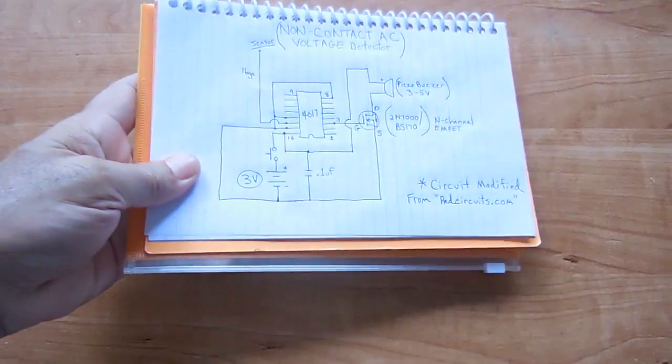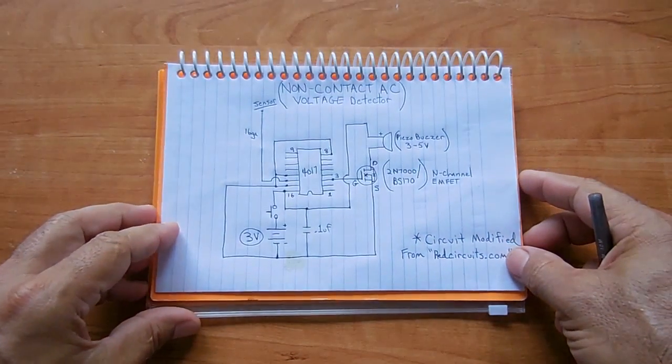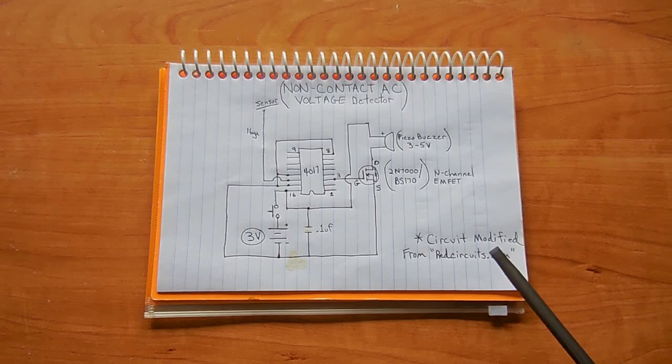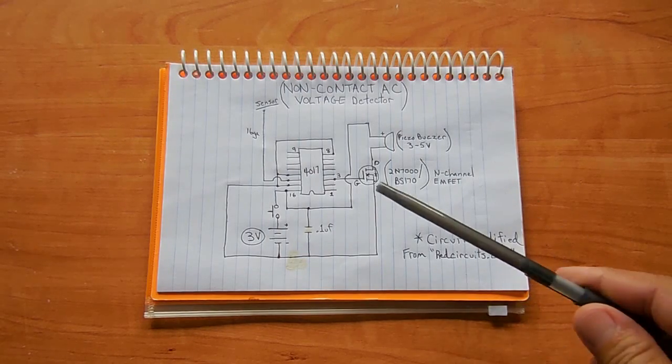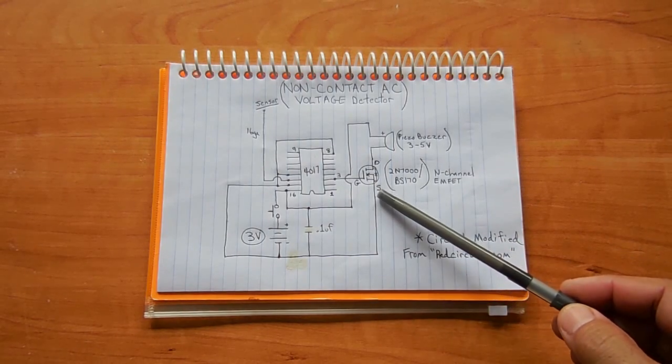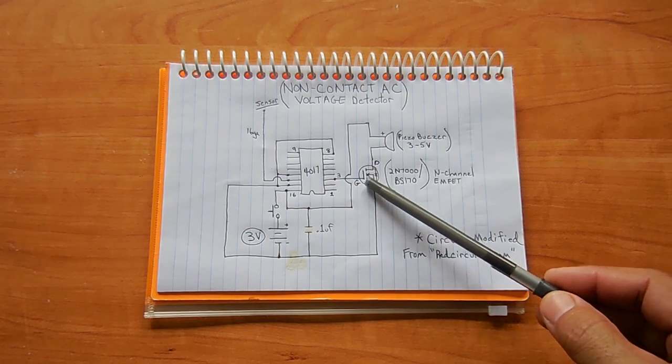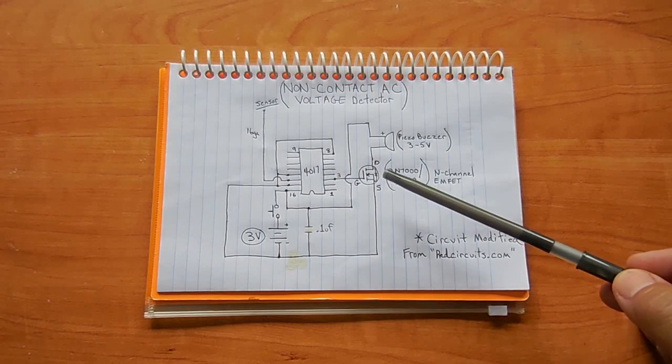The circuit that I'm about to show you is more sensitive and only a fraction of the cost. Let's take a look at the schematic. The schematic that you're looking at I found at redcircuits.com. What I did is I modified the schematic shown at that website by removing the LED which would start flashing when AC voltage is detected.